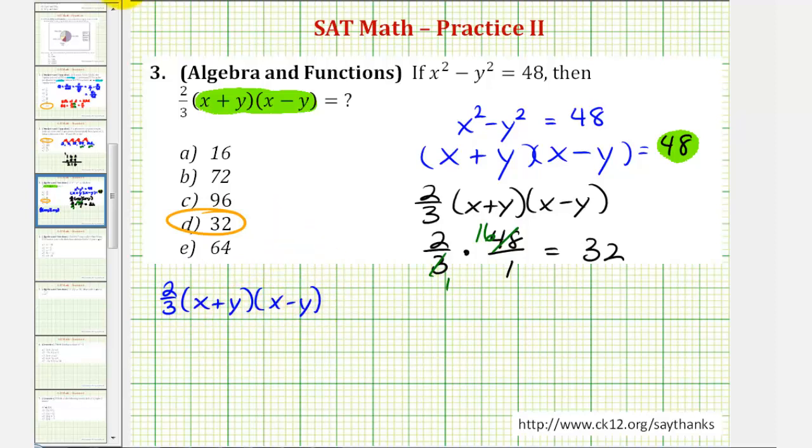And then find this product, where we'd have four products. So we'd have 2/3 times x times x, that's x squared, x times negative y, that's minus xy, and then y times x is plus or a positive xy, and then minus y squared.